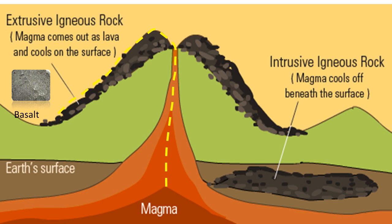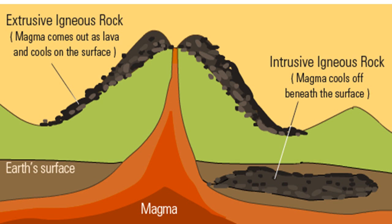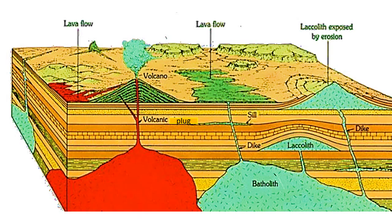Basalt is a common extrusive igneous rock and forms lava flows, lava sheets, and lava plateaus. On cooling, lava can form polygonal columns such as in the Giant's Causeway in Northern Ireland. When rising magma during volcanic activity is not able to reach the surface and gets cooled and solidified below the surface, the rocks thus formed are called intrusive igneous rocks. The rate of cooling is slow inside the Earth, so these rocks are coarser in texture, hard, and have large crystals.